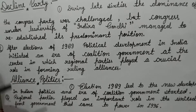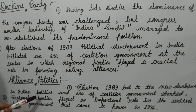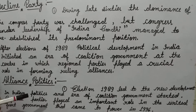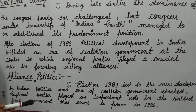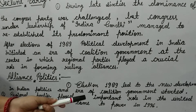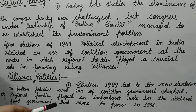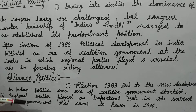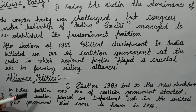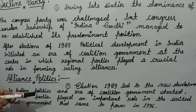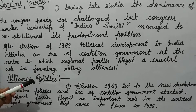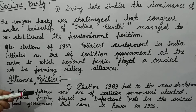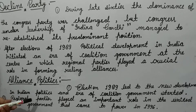The Alliance of Politics: the election of 1989 led to new developments in Indian politics and an era of coalition government started. The coalition government continued and regional parties played an important role in the United Front government that came to power in 1996. Among the regional parties, BSP played an important role in the coalition government.